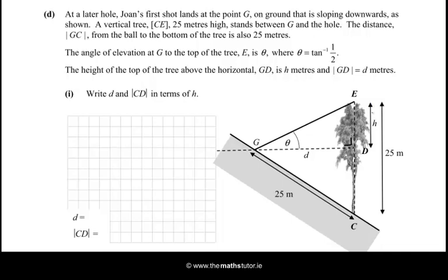OK, so we can see we have H is the distance from D to E, and D is the horizontal distance. So, if tan⁻¹ of θ is 1/2, we have a ratio which says that H over D = 1/2. So, let's write that in for the moment. It might be useful.